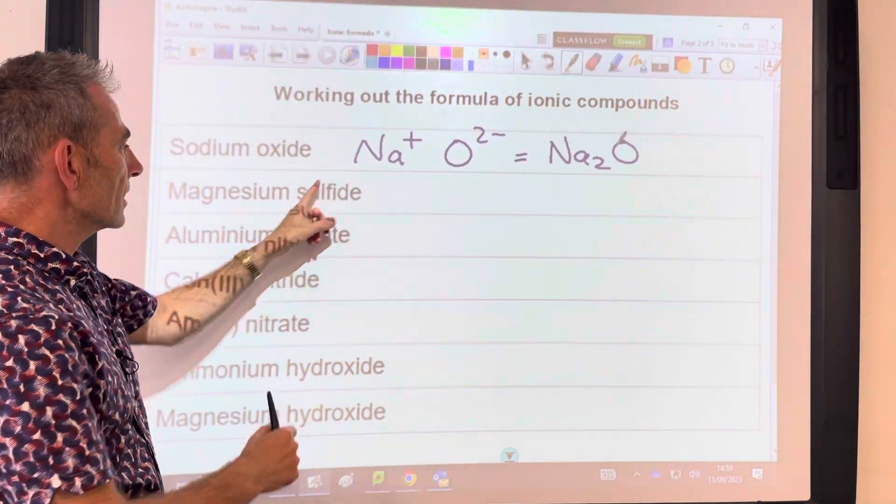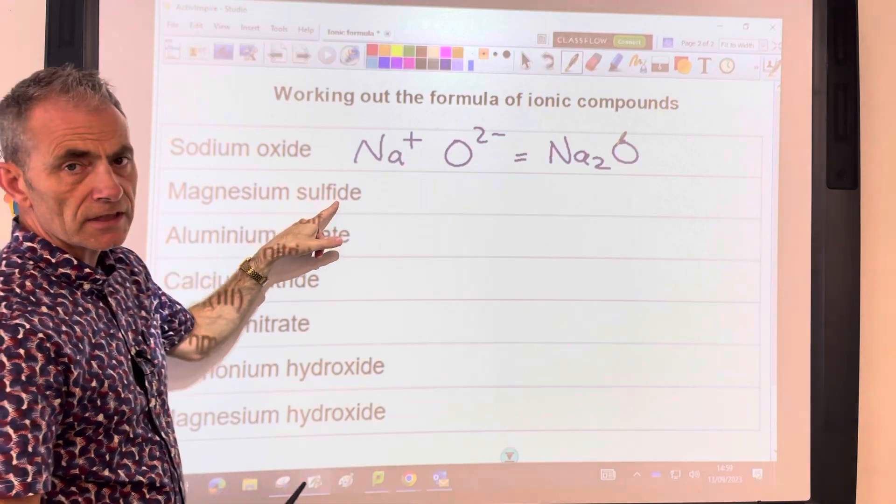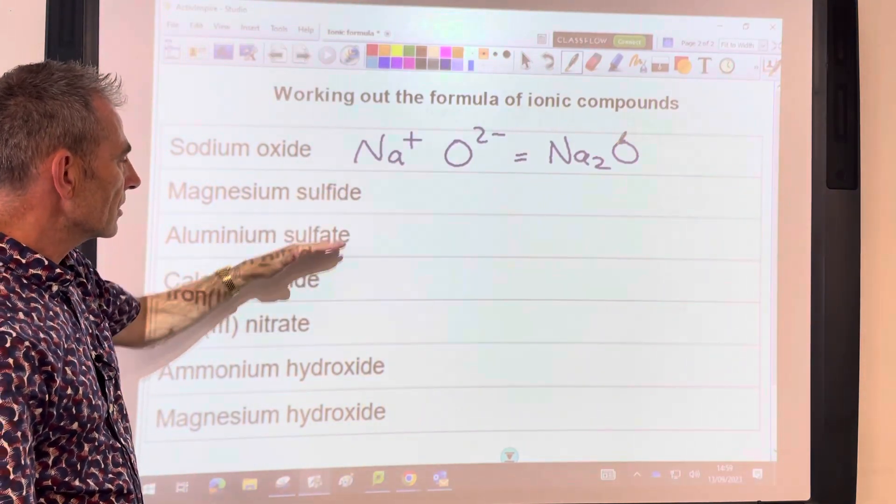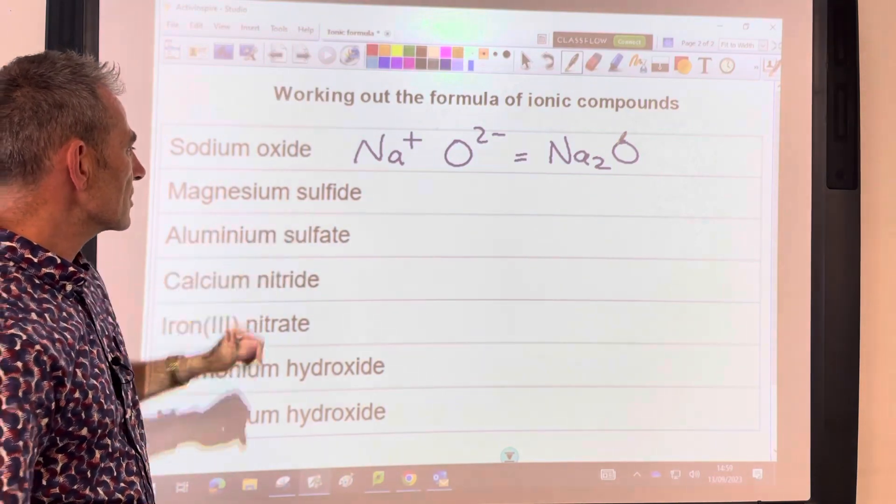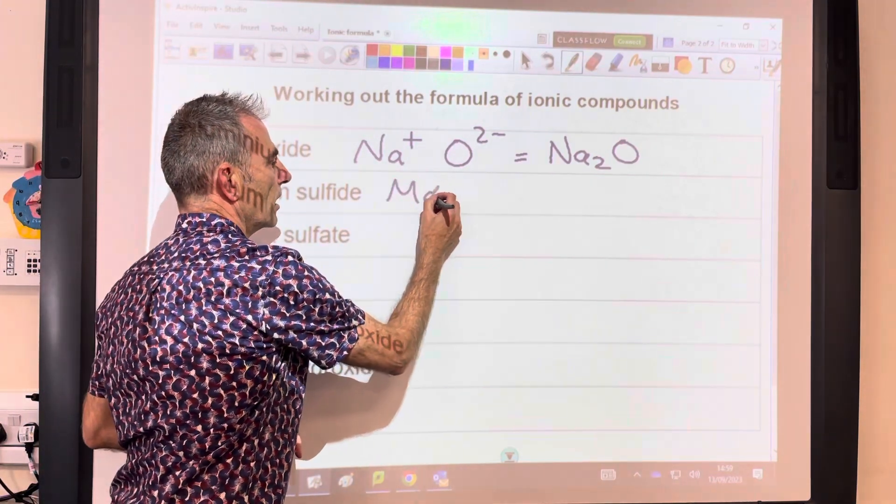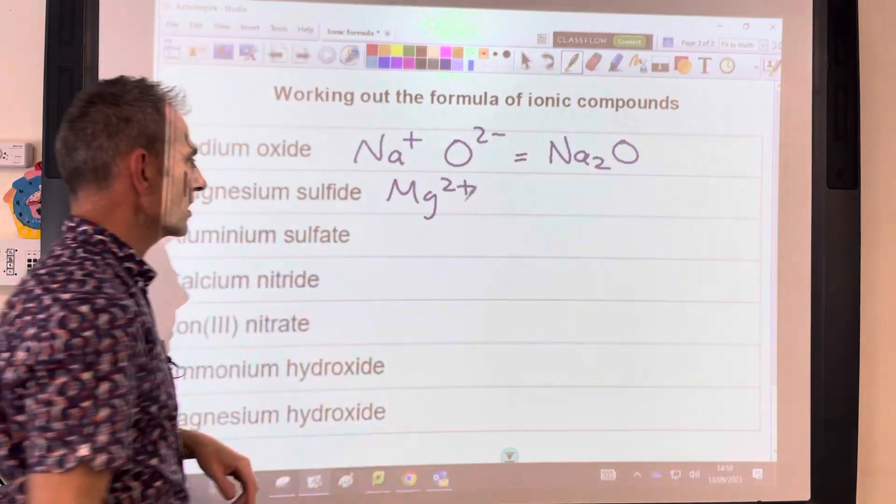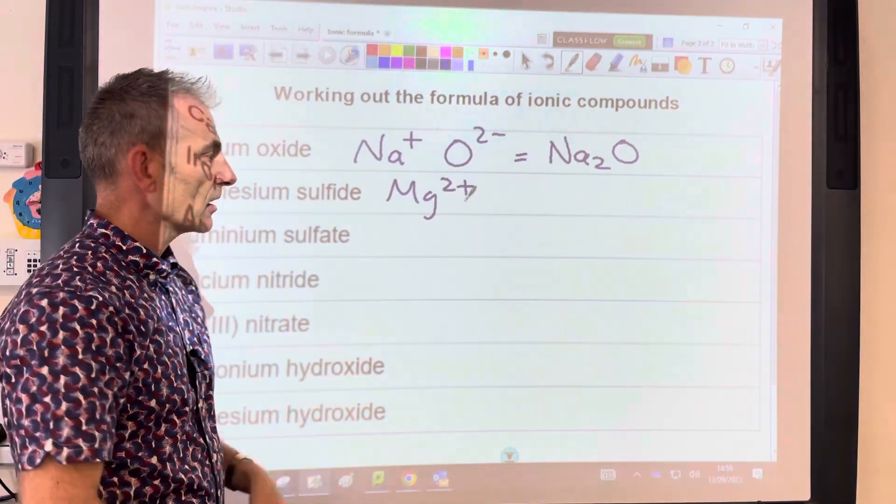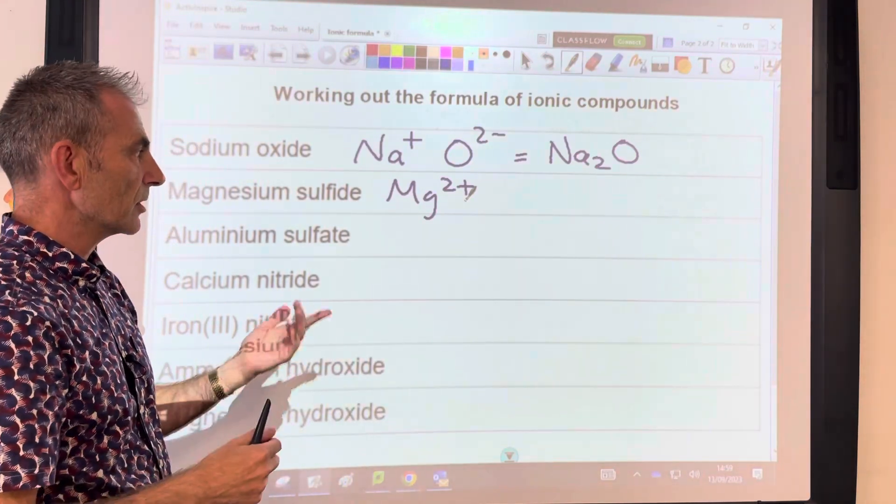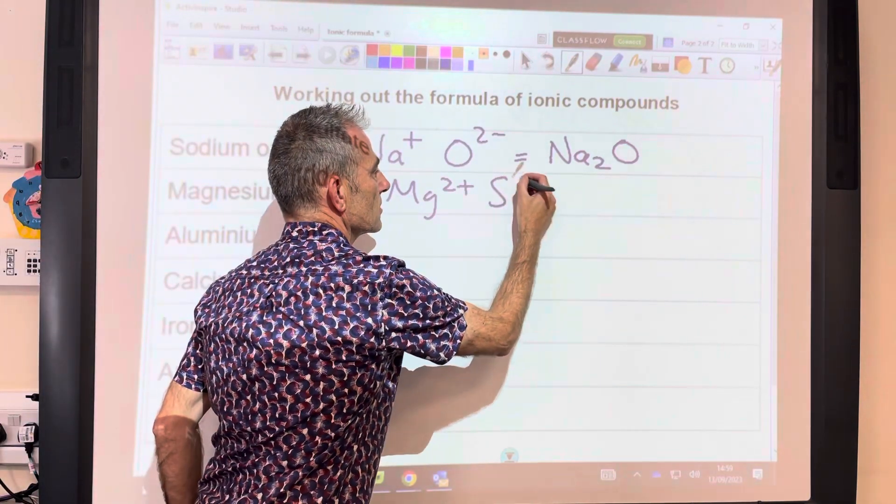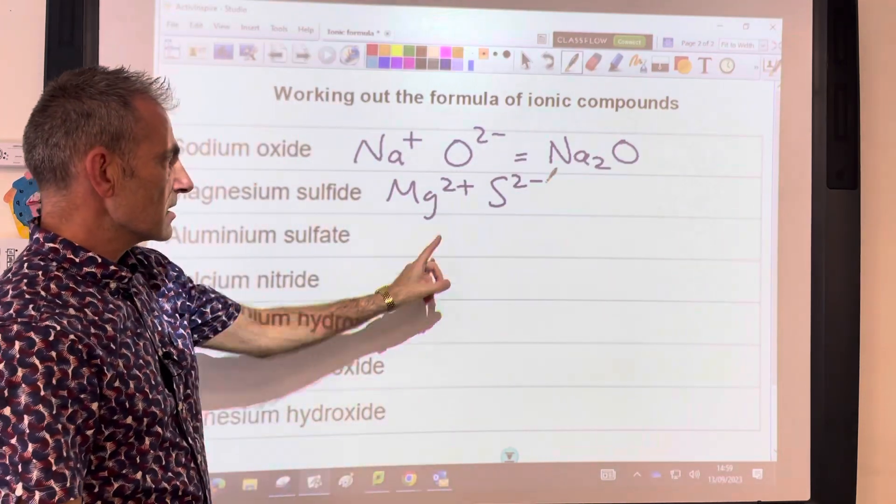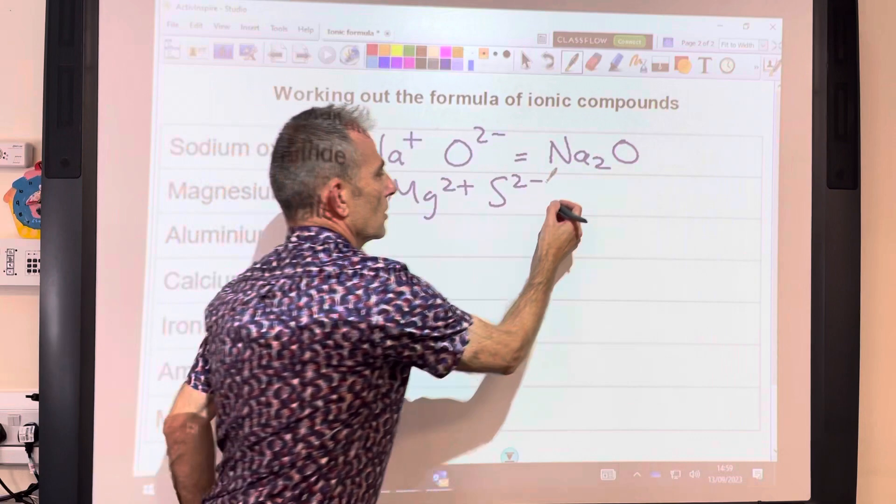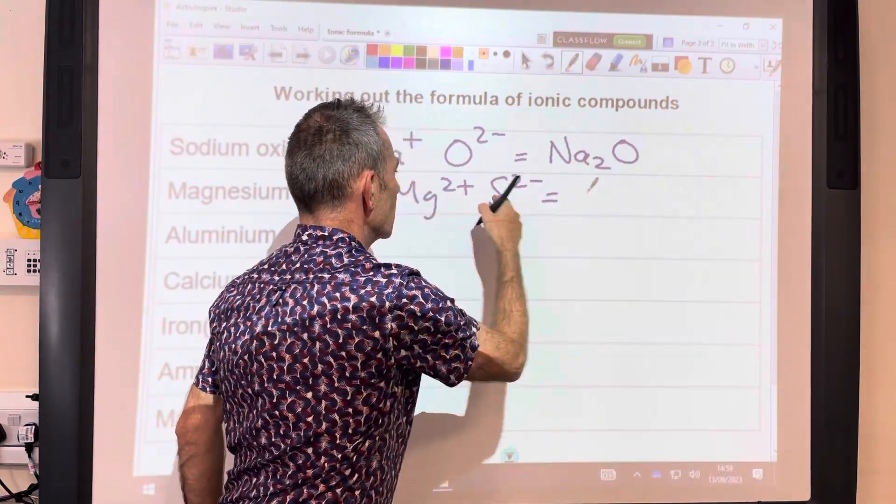Magnesium sulfide now. I've deliberately used sulfide for example 2 and sulfate for example 3, just to make the point of what's the difference between them. Magnesium sulfide contains the magnesium ion, which is Mg2+, and the sulfide ion is just the ion of sulfur. Sulfur's in group 6, it's going to gain two electrons and become 2 minus, so S2-. You can see that just one of each would actually work. There'd be no overall charge, so the formula is MgS.